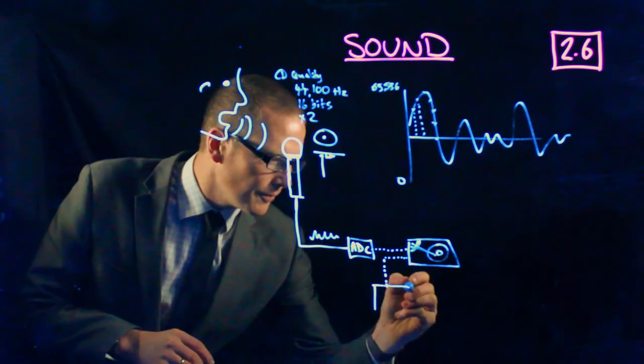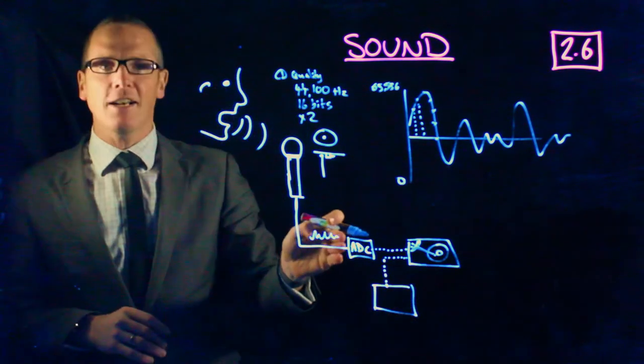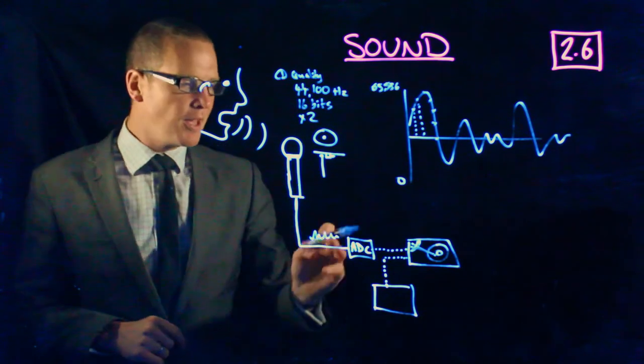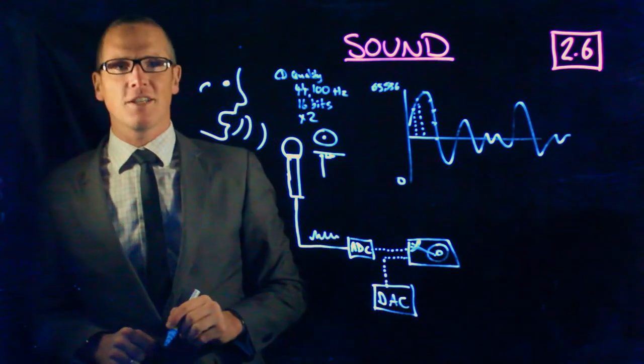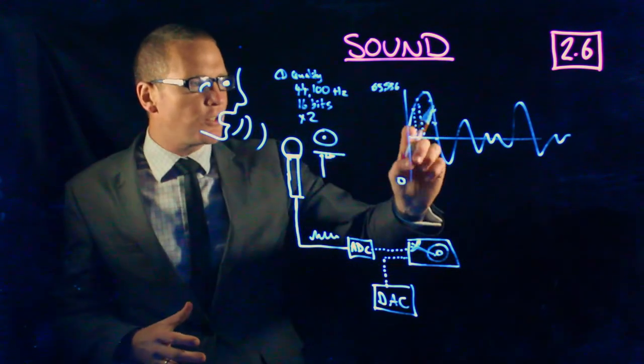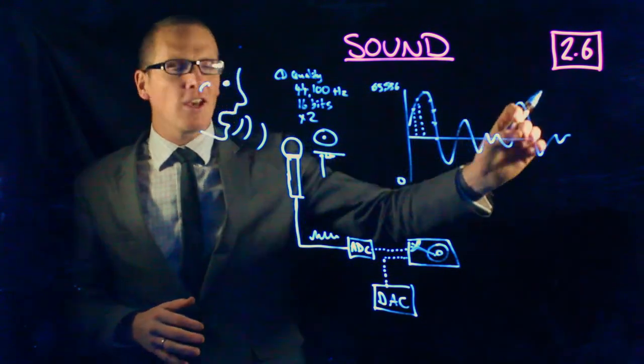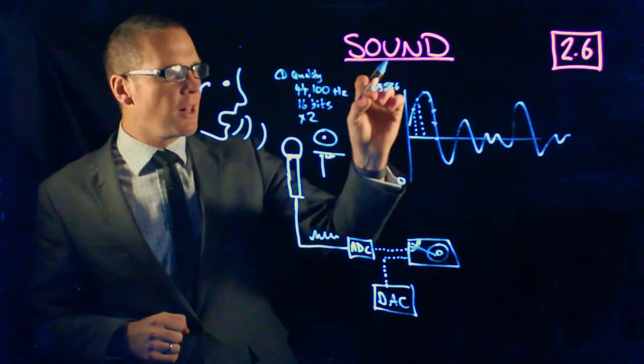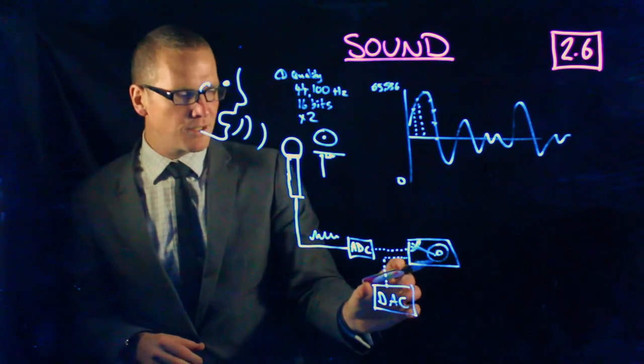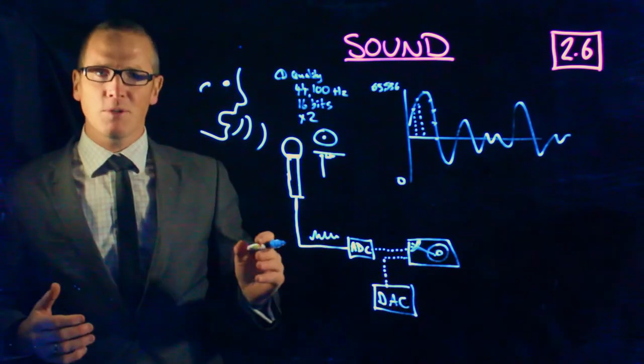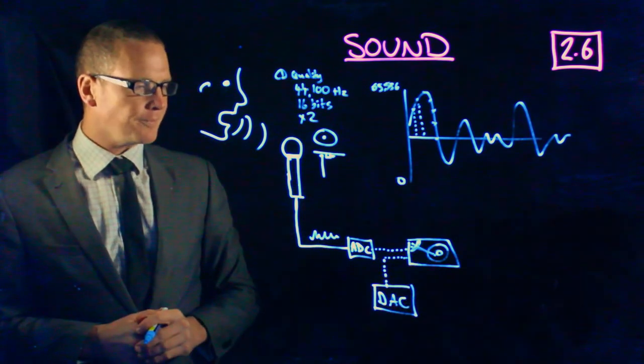...goes into—well, if it was an analog to digital converter the first time, this time it's a digital to analog converter, a DAC. It takes it the other way around, trying to rebuild that curve as closely as possible based on the measurements it's given. Different qualities of DAC will do this in different ways.